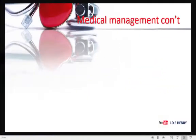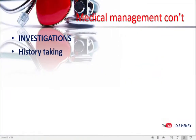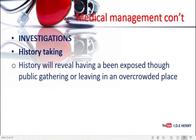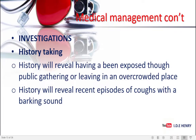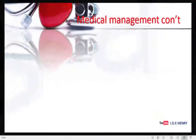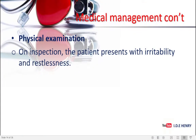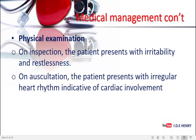Our diagnosis. We're going to start with history taking. I will take history, and history will review having been exposed through public gatherings or living in an area which is overcrowded. History will also review recent episodes of cough with a barking sound. Then under physical examination, on inspection, the patient presents with irritability and restlessness. On auscultation, the patient presents with irregular heart rhythm, indicative of cardiac involvement.